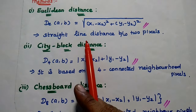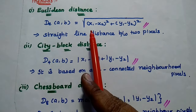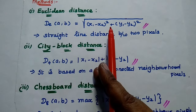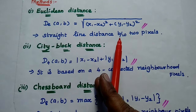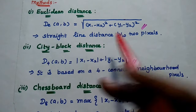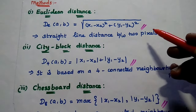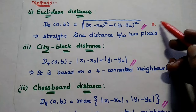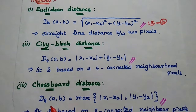Euclidean distance can be obtained using the formula: square root of (x1 minus x2) whole squared plus (y1 minus y2) whole squared. This gives a straight line distance. We can simply say the Euclidean distance is a straight line distance between two pixel values.